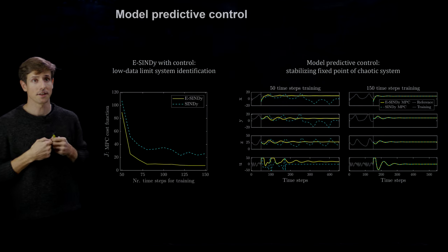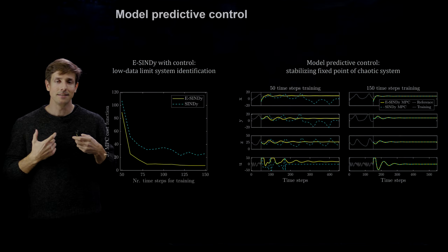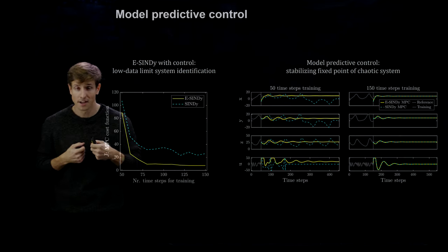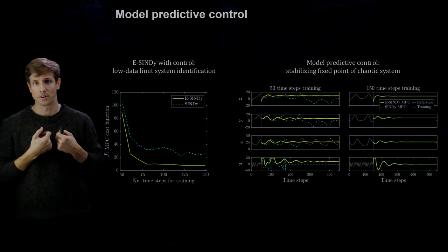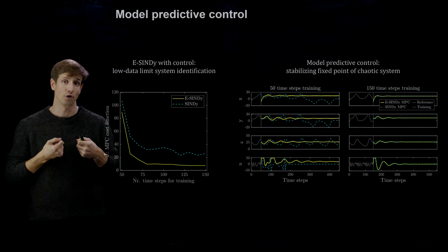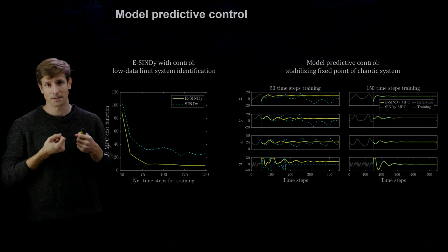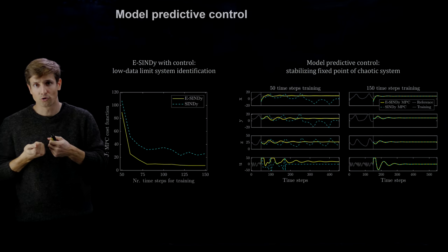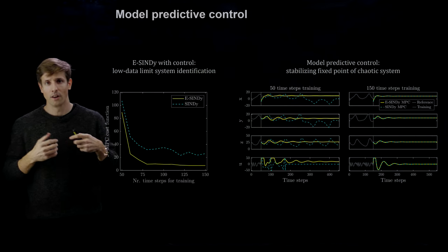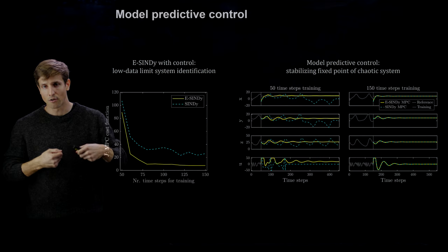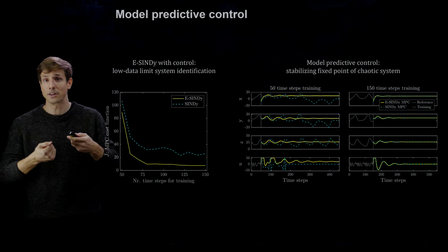The last example in our paper applies eSINDy to identify models with external or control inputs, which can be used in a model predictive control framework. We show that by using Ensemble SINDy we can get more accurate controllers with less training data — essentially better control faster, identifying accurate controllers quickly without long training.